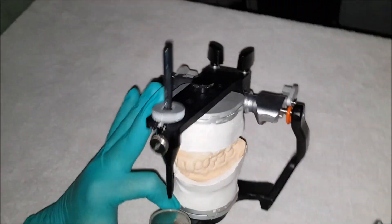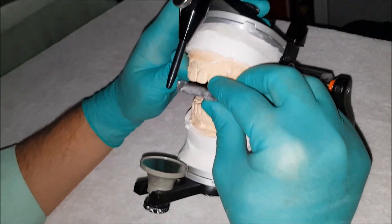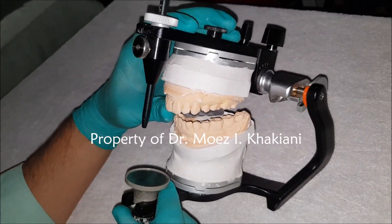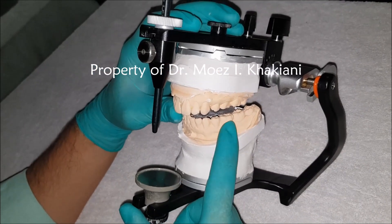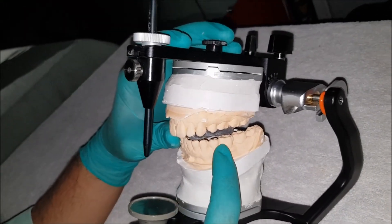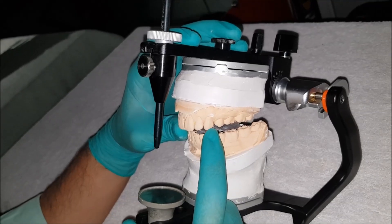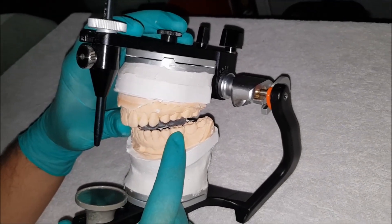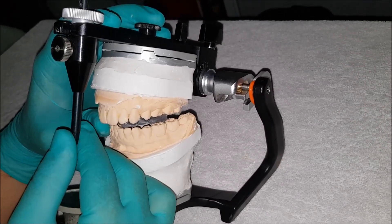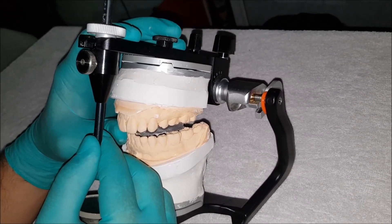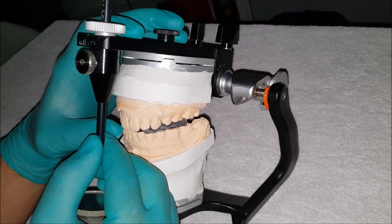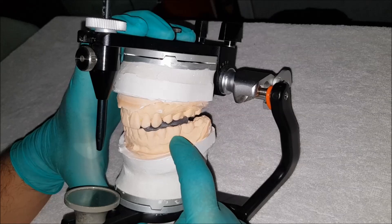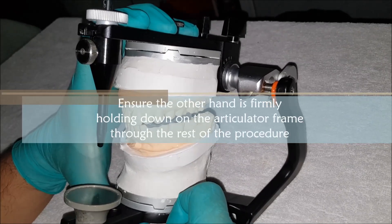We now take the protrusive record and we seat it on the maxillary cast. As I close down, you can appreciate that the teeth do not intercuspate into the wax wafer. This is because the casts are mounted in CR, but the record is protrusive. So to take the mandibular cast into the record, what I have to do is gently push the maxillary frame behind. And as I push that, you can now appreciate that the mandibular teeth go and fit into the indents perfectly.